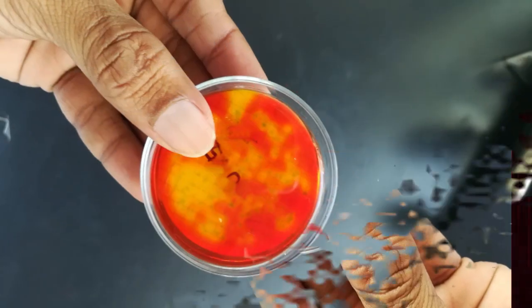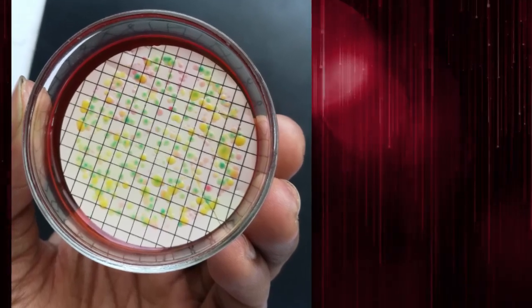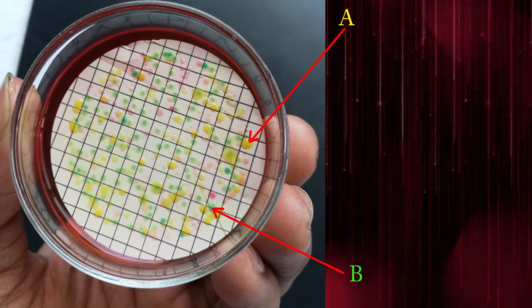This is Membrane Lactose Glucuronide Agar Media. Can you identify yellow color A organism and green color B organism?